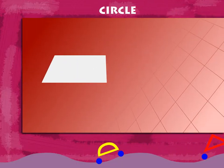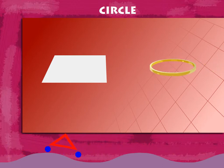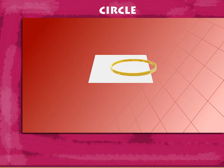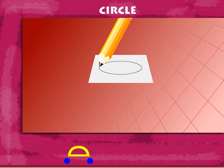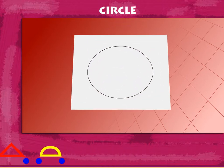Circle: Take a sheet of paper and a bangle. Place the bangle on the paper and move a pencil along its curved edge. You will get a closed curve.